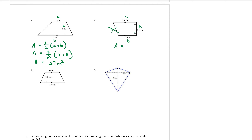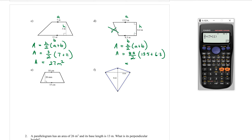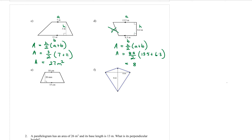That means the 8.4 is the h, and the 11 is just there to trick us. The formula for a trapezium is h over 2, bracket a plus b. Substituting in: 8.4 over 2, bracket a is 13.5 and b is 6.3. Calculating: 8.4 over 2 times 13.5 plus 6.3 gives 83.16 metres squared.